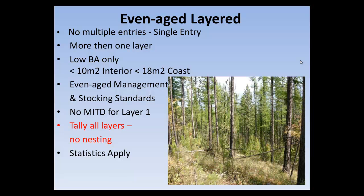Typically if you're in an even-age layered situation and your primary objective is timber - conifer regeneration - then we're at the lower end of the retention scale, the lower basal areas. In the interior, something less than 10 square meters, and for the coast something less than 18 square meters, because over these basal areas you're really compromising on the regen layer. Any significant growth loss starts to happen on these higher retention layers.